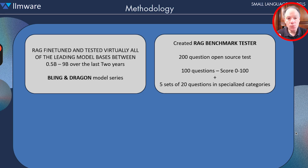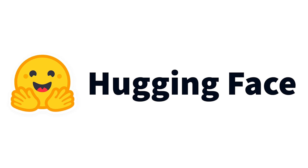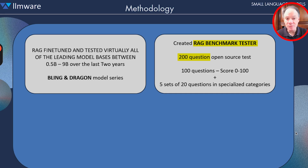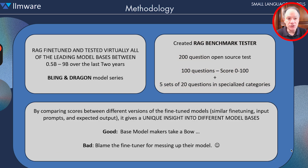So we built what we'd describe as a very common sense, pragmatic benchmark tester. It's 200 questions, available in our Hugging Face repository in open source, and it's been used now thousands of times. The first 100 questions we use to form the score between 0 and 100. The second 100 questions, as I mentioned, consist of five sets of 20 questions in some of these specialized areas.